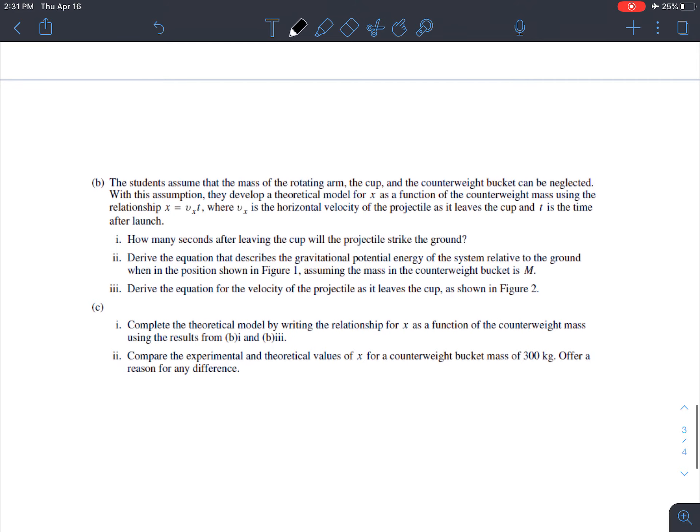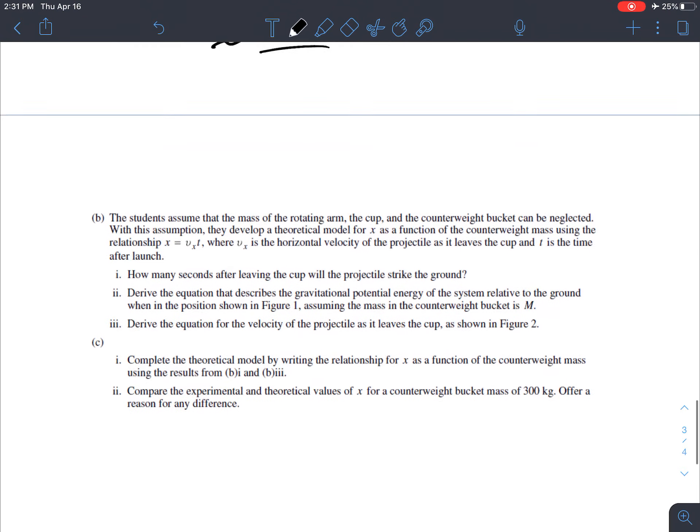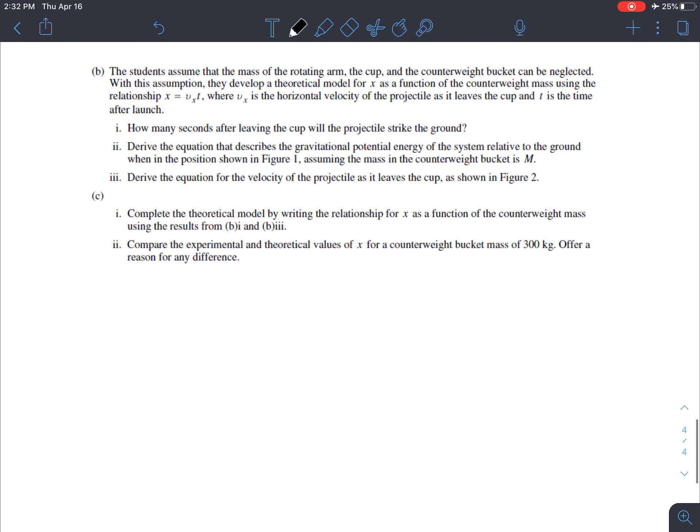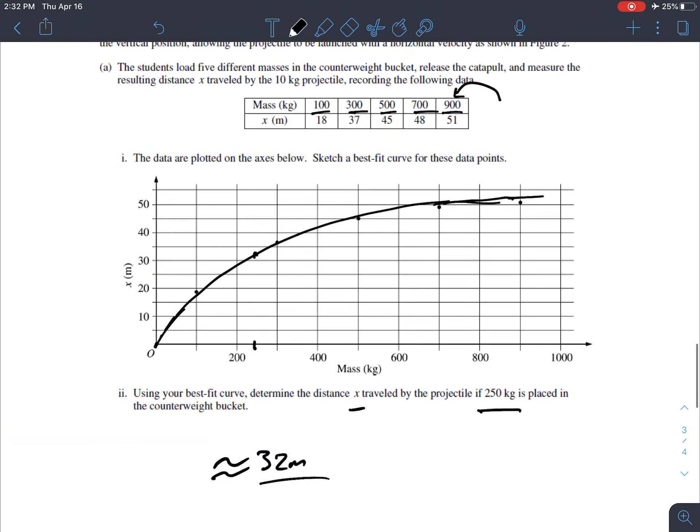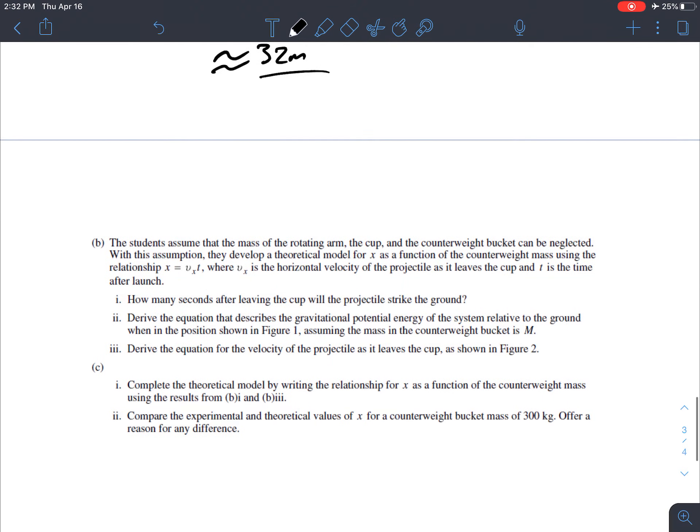About 32 meters. That pen is a little bit too thick. Let's try this one, 32 meters, something like that. Great. Now here's the real work. I think that's only two points out of the 15 so far. Students assume that the mass of the rotating arm, the cup, and the counterweight bucket can be neglected. In other words, the only things that we're really thinking about have mass are the big mass and the counterweight and the 10 kilograms up here that's going to get launched. Those are the only things.